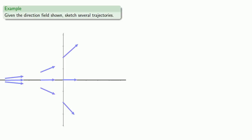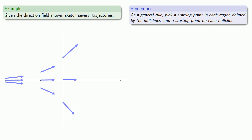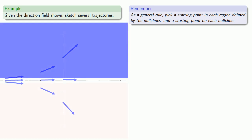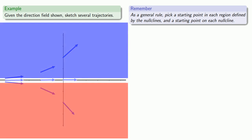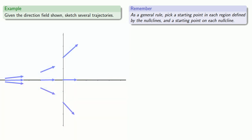So for example, given the direction field shown, let's sketch several trajectories. A good guideline is, as a general rule, pick a starting point in each region defined by the nullclines, and also a starting point on each of the nullclines. So our nullcline splits the plane into two regions — the top and the bottom. So let's pick a point in the top region, right here, which is conveniently enough where we've drawn a direction arrow.